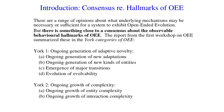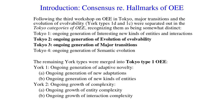The second York category relates to the ongoing growth of complexity. Following the third workshop, which was in Tokyo, major transitions and the evolution of evolvability were separated out, recognising them as being somewhat distinct. The remaining York types were merged into Tokyo Type 1 Open Ended Evolution. So within Tokyo Type 1, we have both the ongoing generation of adaptive novelty and the ongoing growth of complexity.